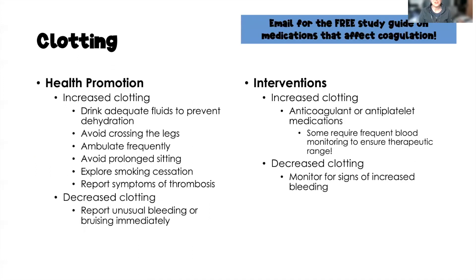For health promotion with increased clotting risk factors, we want clients to drink adequate fluids to prevent dehydration — when the body becomes dehydrated, blood gets thicker and predisposes us to clotting. We also want to avoid crossing the legs, avoid prolonged sitting, and ambulate frequently. Early and frequent ambulation is our best preventative measure against blood clots, especially in post-surgical clients. Explore smoking cessation and monitor for any symptoms of thrombosis. For decreased clotting, clients should be careful with activities of daily living to avoid accidental injury, and monitor for and report any unusual bleeding or bruising immediately.